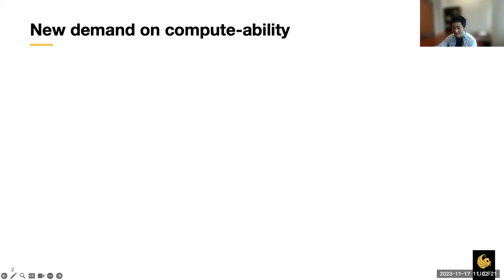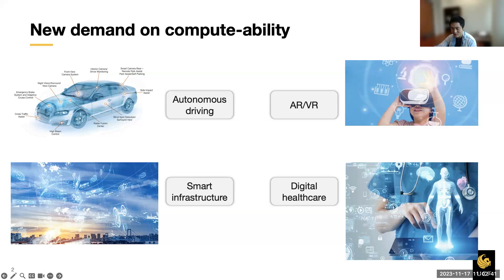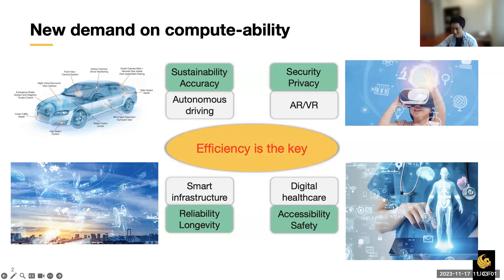Today's topic is on efficient hardware architecture via unary computing for deep learning. The rapid advancement of interdisciplinary technologies has allowed the emergence of diverse devices and hardware systems that improve our well-being, including autonomous driving, AR, VR, smart infrastructure, and digital healthcare. These emerging applications are increasingly relying on deep learning, creating new demands on compute ability and putting pressure on computer architects to build systems that can meet the power and resource constraints of those applications.